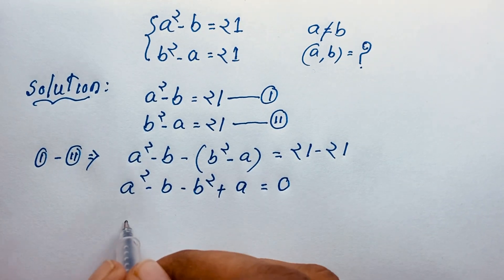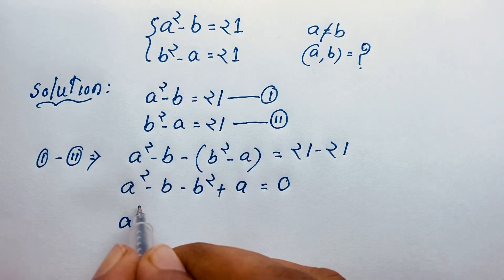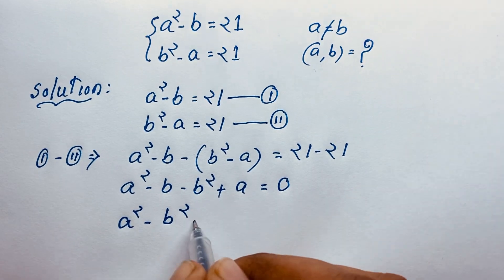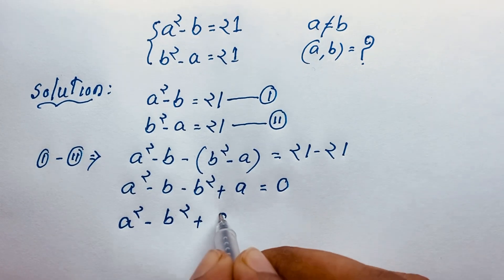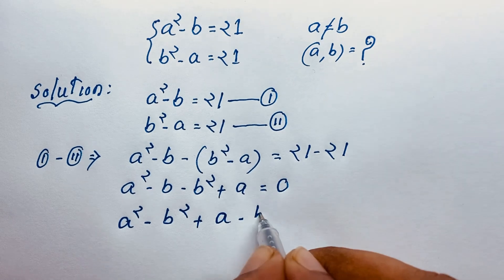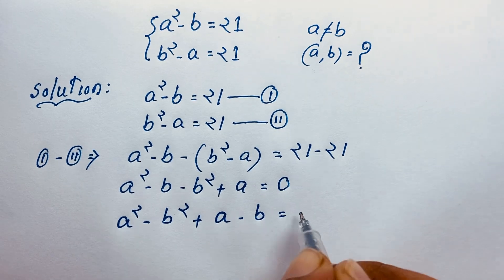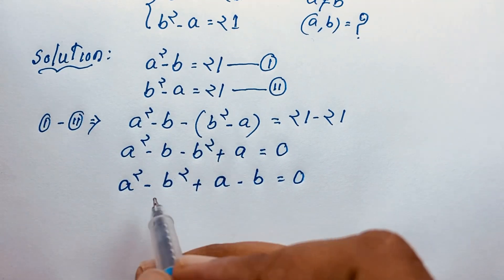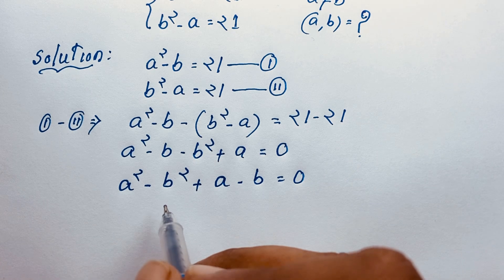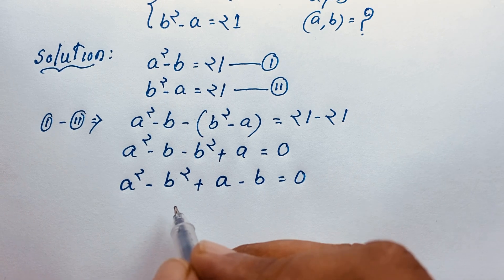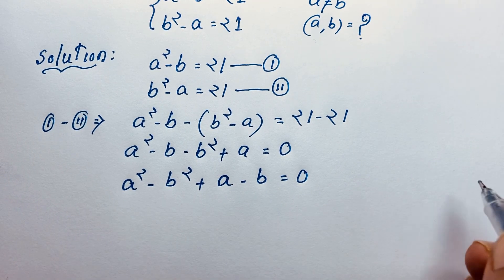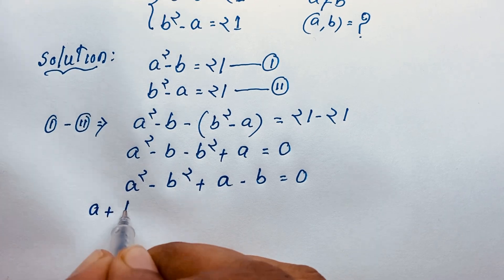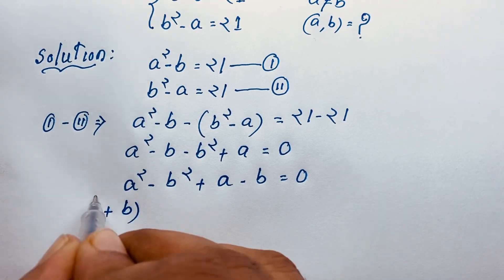You can see here a squared minus b squared, then plus a and minus b, all equal to zero. Now, according to the difference of squares formula, a squared minus b squared equals (a plus b)(a minus b), so we apply that formula here: (a plus b)(a minus b) plus a minus b equals zero.